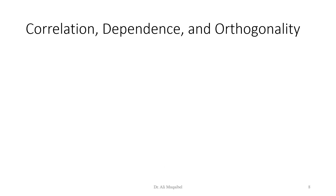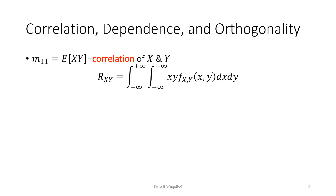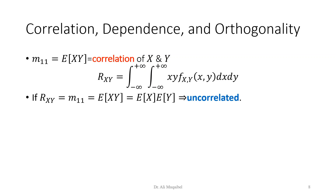Now we come to very important joint characteristics: correlation, dependence, and orthogonality. The second moment m_{1,1} — the expected value of the product of the two variables — is called the correlation. Correlating two variables means multiplying them and finding the expectation of that product; correlation has significant physical meaning. Because correlation is widely used, we dedicate the letter R, so R_{XY} = m_{1,1} = E[XY].